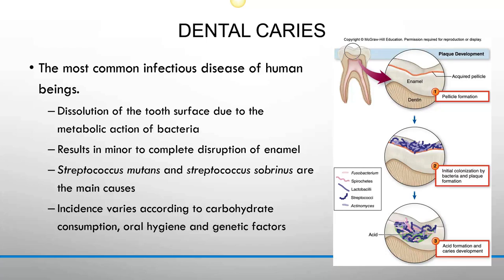Incidence varies according to carbohydrate consumption, oral hygiene, and genetic factors. There is a genetic component — specifically the integrity of the enamel. With the bacteria, they start to produce an acid while they metabolize food in the area, and through acid production they're going to start corroding away the enamel.